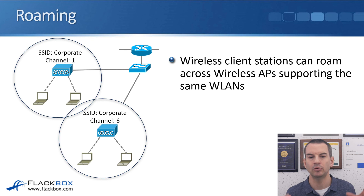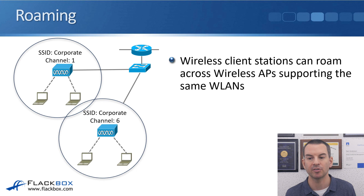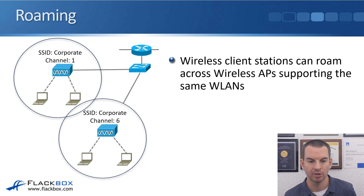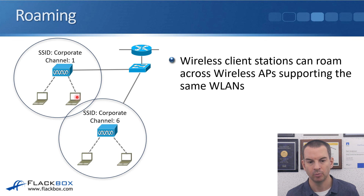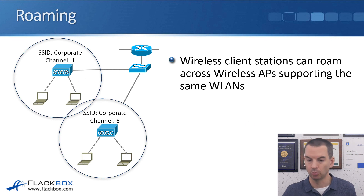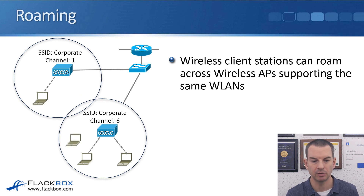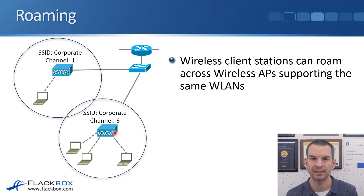Finally, we have roaming. Wireless client stations can roam across wireless APs supporting the same WLANs. In our example here, we've got a laptop currently connected to the first AP. If you're wandering around the building with your laptop, it can roam to other APs.